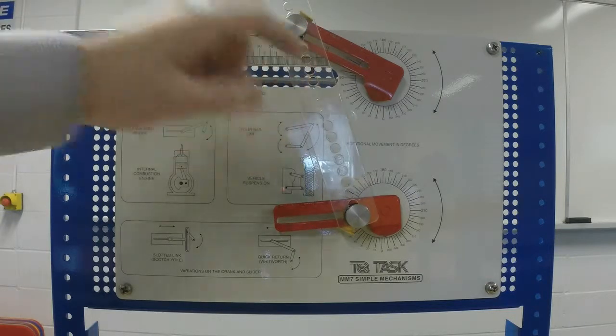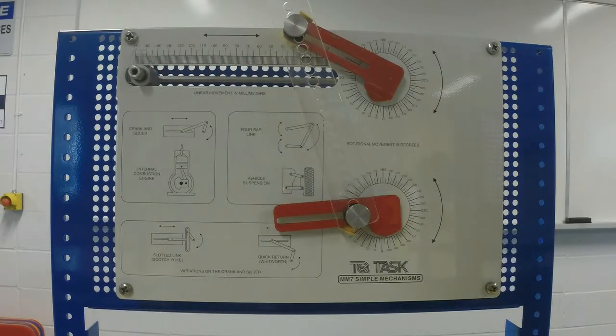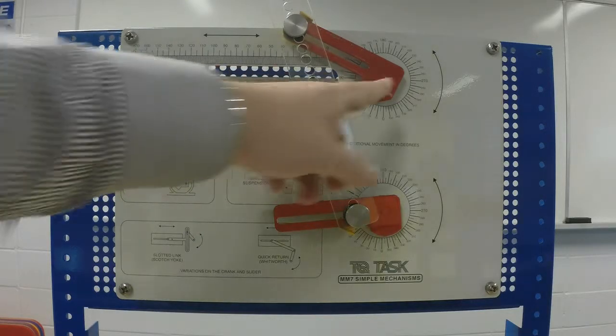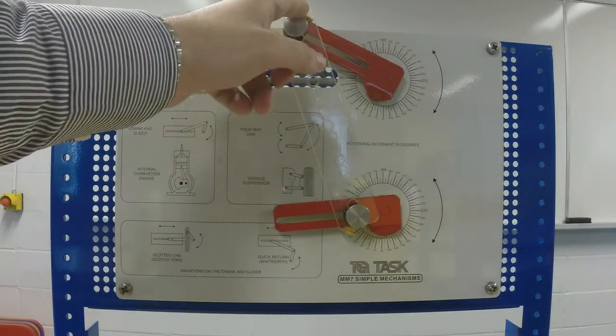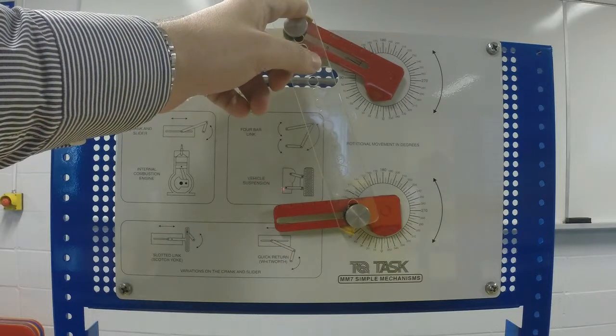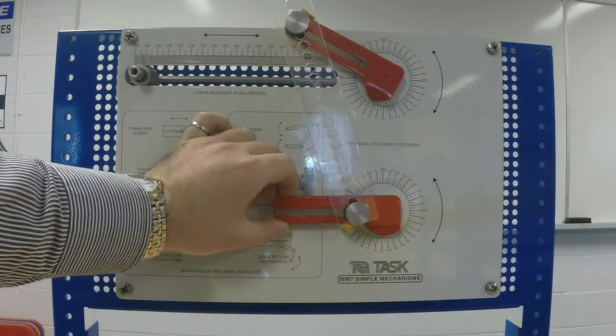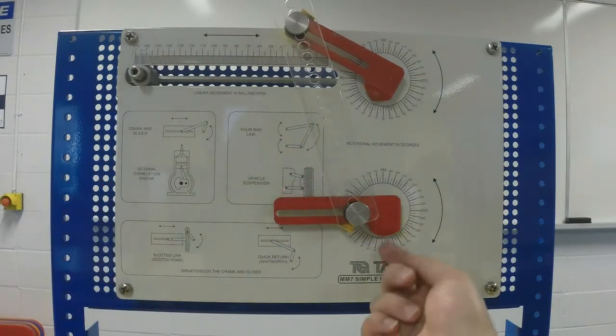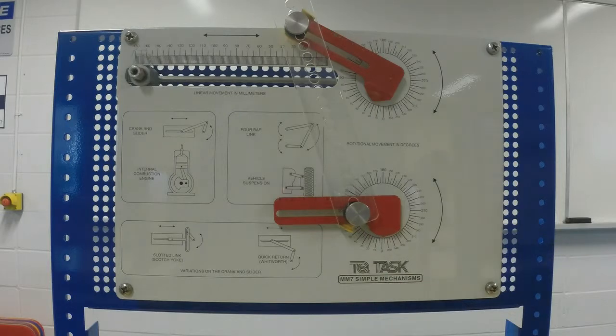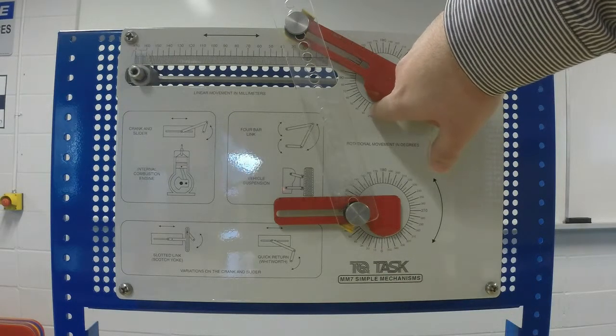The follower crank or output crank is 90 millimeters—from center here to the pin is 90 millimeters. Turn the input to zero, so we are at zero here, and note the output angle. The output angle for this apparatus is around 25 degrees.